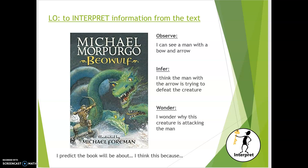So for example, I predict that the book will be about a man who's got to kill a sea serpent. I think this because on the front cover I can see a man with a bow and arrow and a monster in the background. This will be a good time now to pause this video, go back to Teams, and put your answers into the worksheet provided.